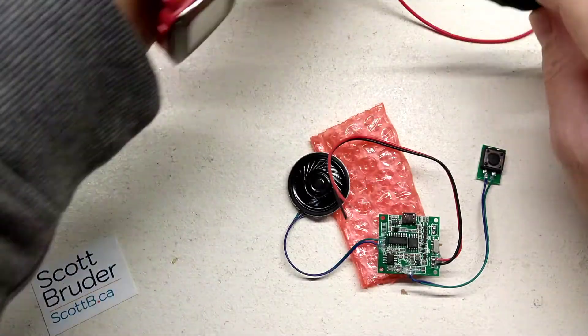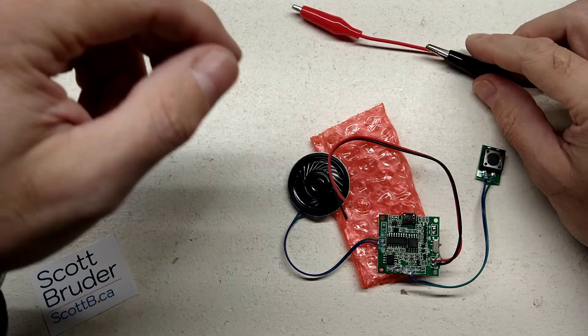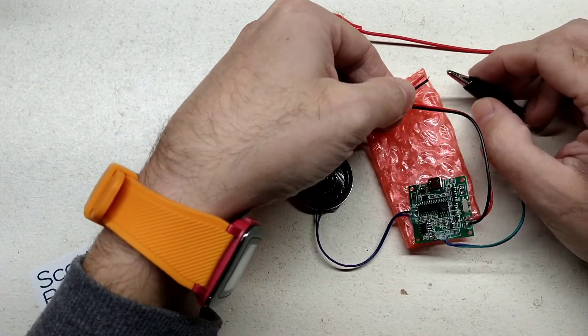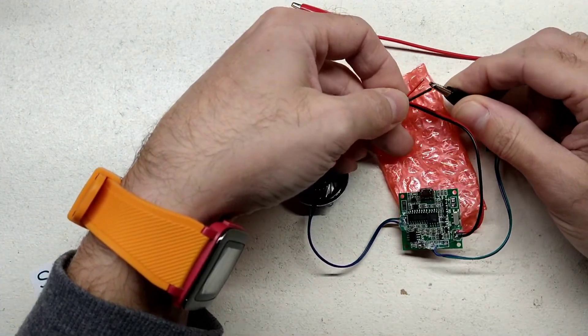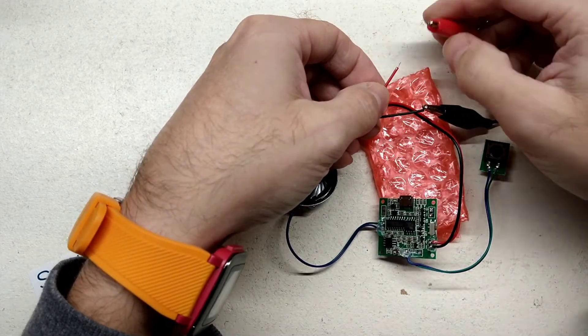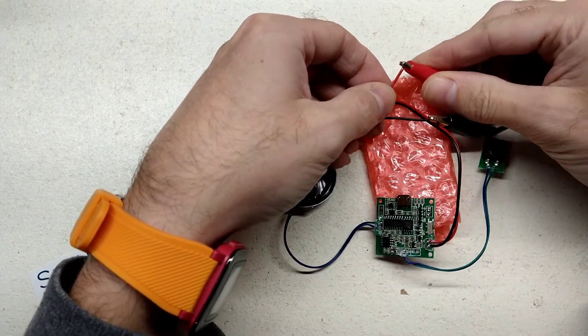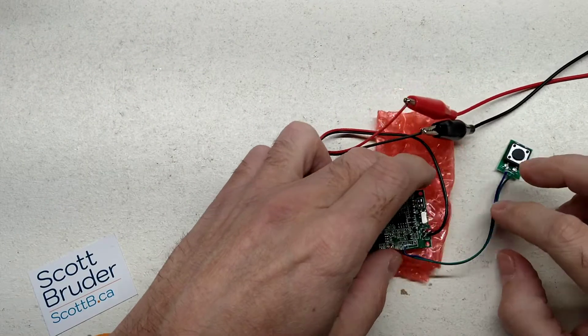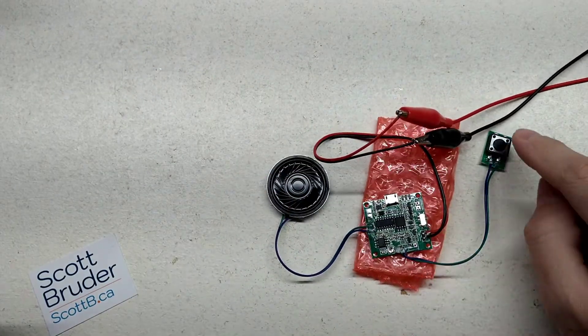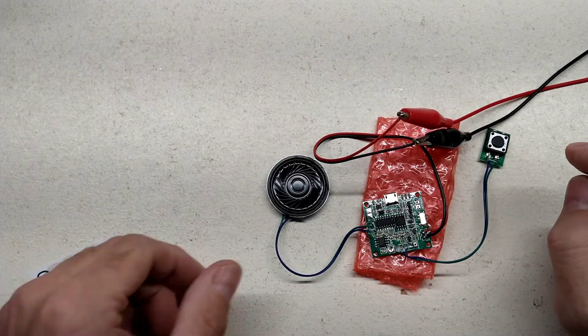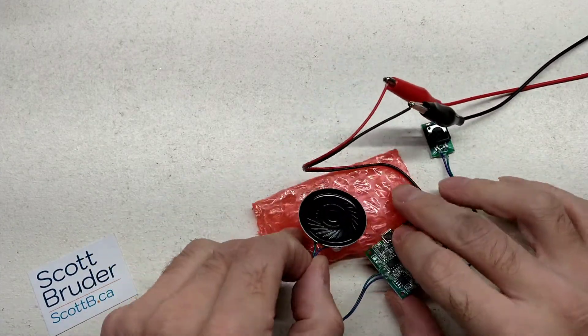So what I have here is just two leads from my 5 volt power supply and to keep with color coding, I'm going to add 5 volts and red for our positive. So, the unit itself works just as so. Push the button, it plays the music.